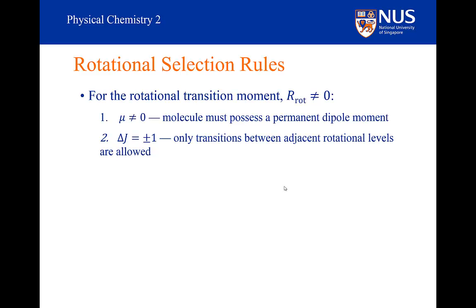There is a semi-classical way of appreciating this that has to do with conservation of angular momentum. Remember, J tells us how much angular momentum the system has. The higher the value of J, the more the angular momentum. A photon has one unit of angular momentum, but you don't know if it is plus 1 unit or minus 1 unit. Why would it be plus or minus? Well, you can think of it as clockwise rotation or anticlockwise rotation.